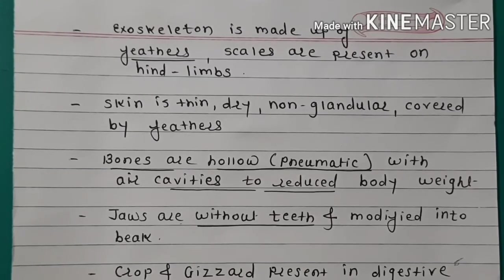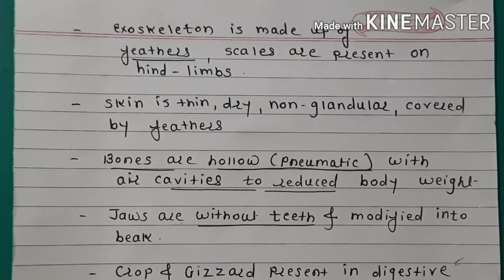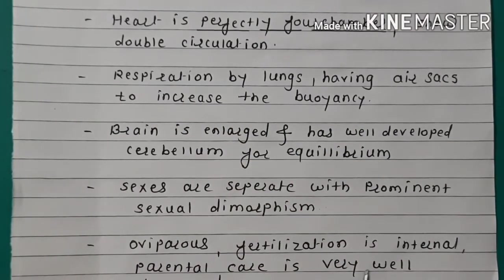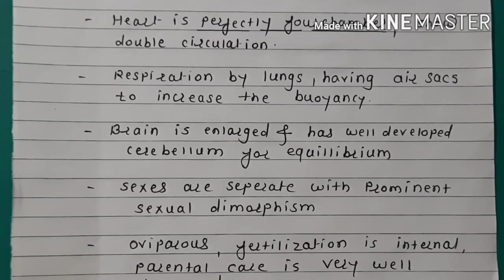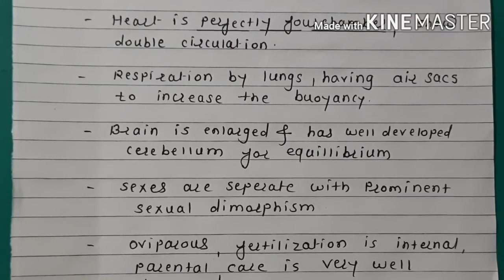Jaws are without teeth and modified into a beak. Crop and gizzard are present in the digestive system. Heart is perfectly four-chambered. Shows double circulation. Respiration by lungs having air sacs, to increase buoyancy. Brain is enlarged and has a well-developed cerebellum for equilibrium. Sexes are separate with prominent sexual dimorphism. Oviparous. Fertilization is internal. Parental care is very well developed.